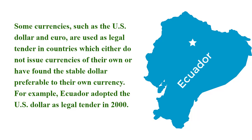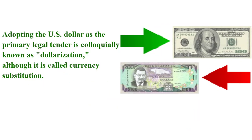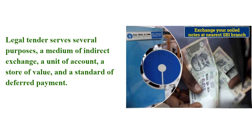For example, Ecuador adopted the U.S. dollar as legal tender in 2000. Adopting the U.S. dollar as the primary legal tender is colloquially known as dollarization, although it is technically currency substitution. Legal tender serves several purposes: a medium of indirect exchange, a unit of account, a store of value, and a standard of deferred payment.